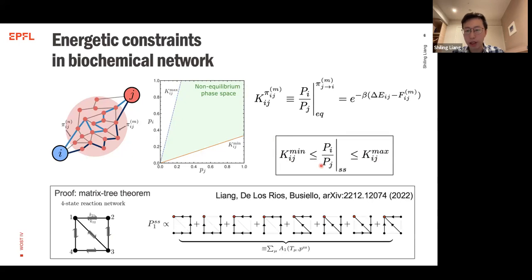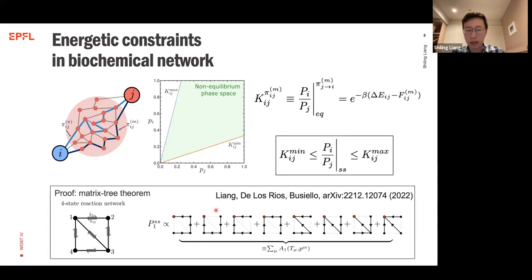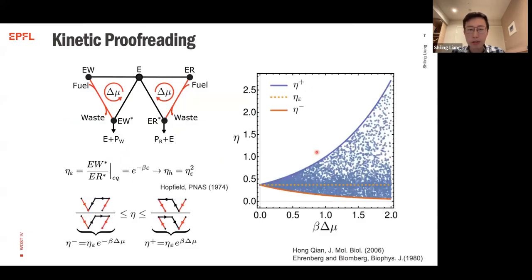We can understand this bound intuitively, but we also provide a rigorous proof in our preprint based on the matrix tree theorem. The benefit of the matrix tree theorem is that we can decompose a stationary state in terms of all spanning trees; since spanning trees contain no cycles, they represent the equilibrium properties of the system. For the nonlinear system, the directed spanning tree also has a part that depends on the system state itself, but we can cancel all nonlinear terms and recover the bound.